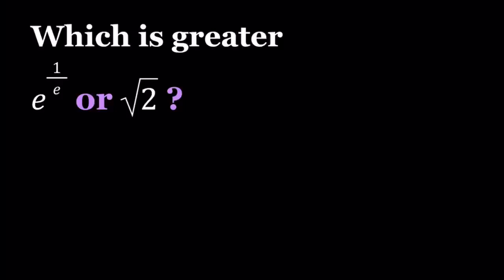Let's go ahead and write square root of 2 using the idea of rational exponents as 2 to the power 1 half. In other words, square root of 2 is the positive number whose square equals 2. So this gives us these two numbers to compare: e to the power 1 over e versus 2 to the power 1 over 2, which is nice because they have the same type of structure.